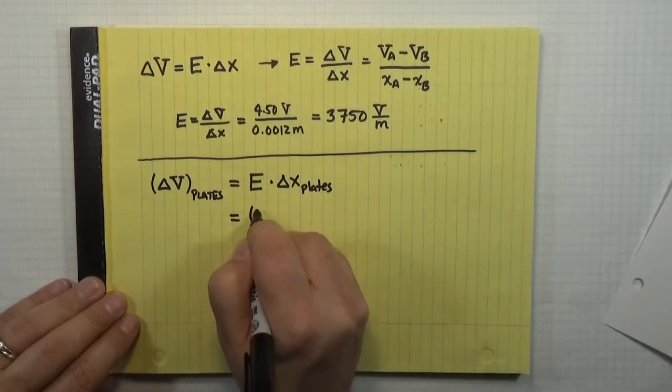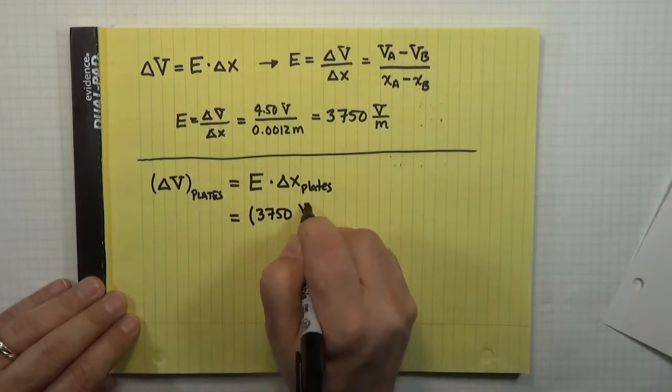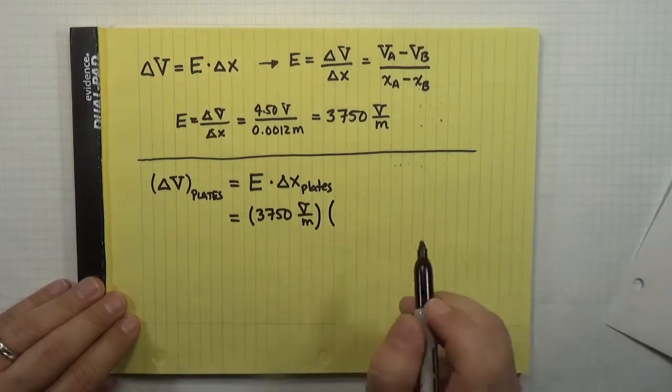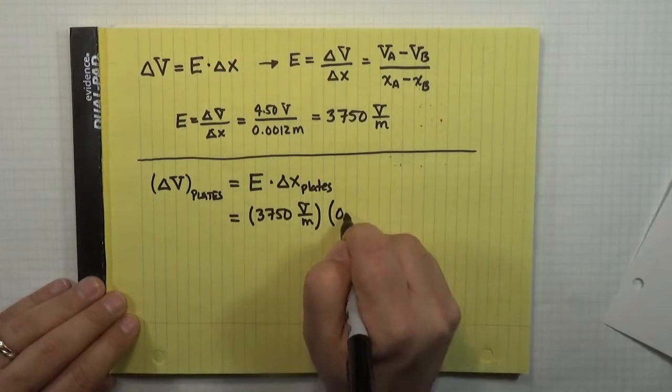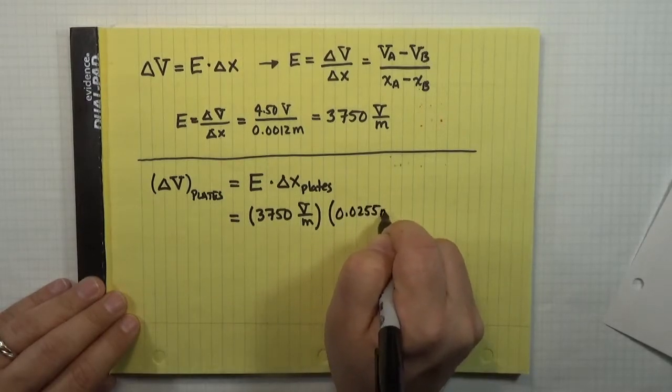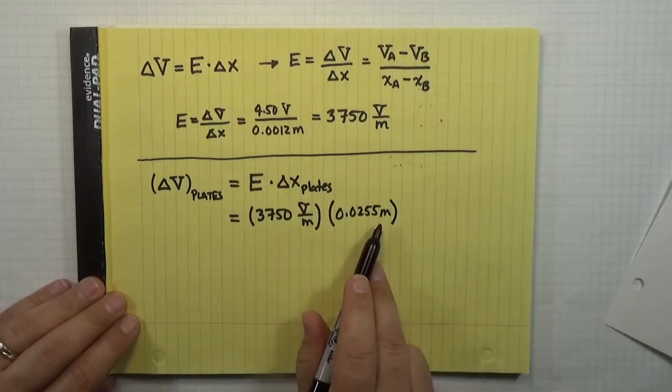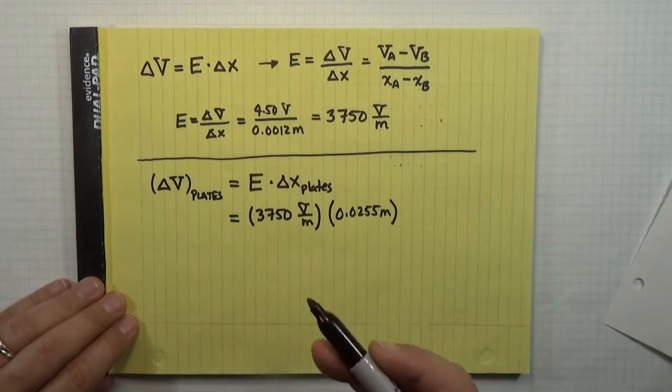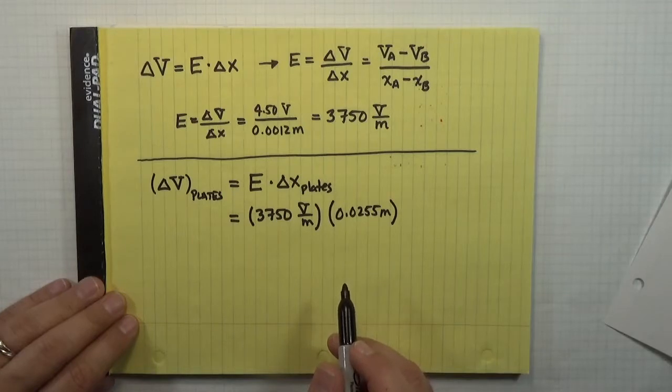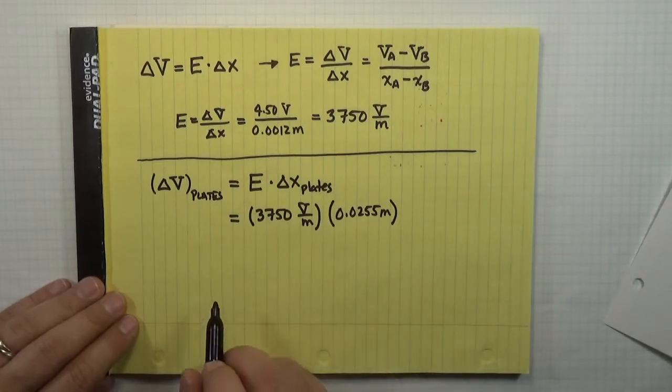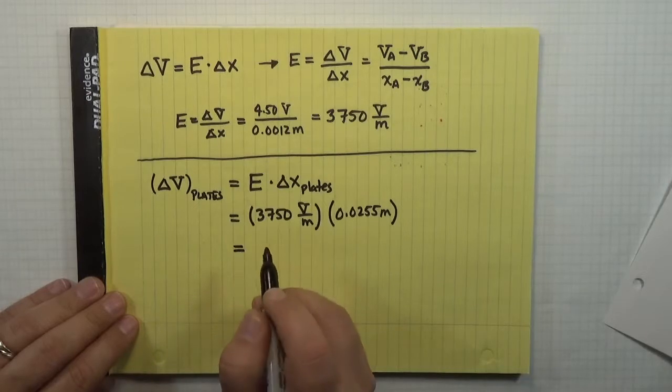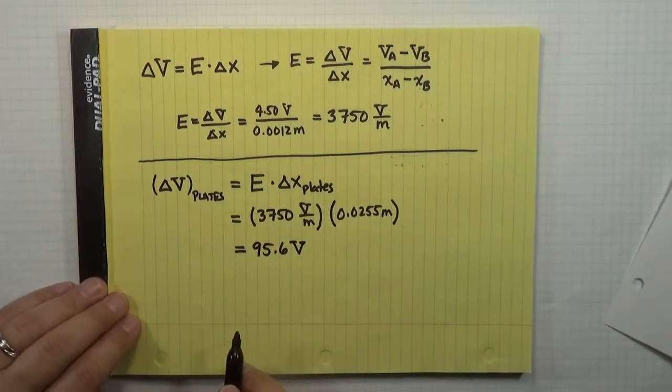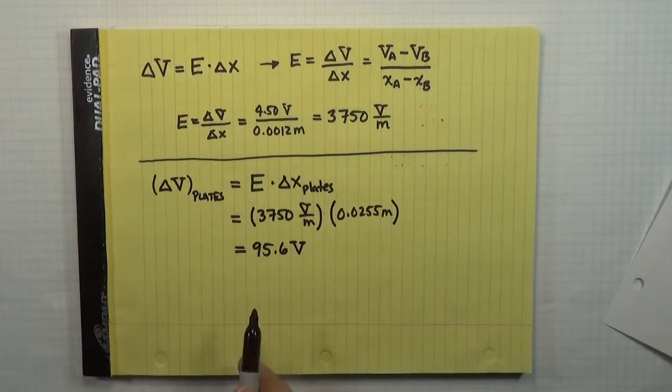So this becomes 3,750 volts per meter. And the separation between the plates, again, making sure that I convert to SI units is 0.0255 meters. If I don't convert to SI units, if I were to be a little bit sloppy and leave this as centimeters, the centimeters and the meters would not cancel. So it would clue you into the fact that you hadn't correctly converted your units. But in this case, they do cancel. And so if I multiply that out, I get that there is 95.6 volts of difference, potential difference, between the two plates in this problem.